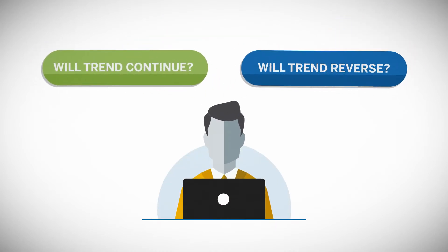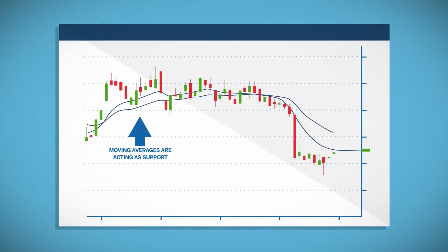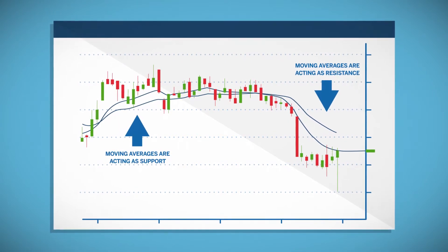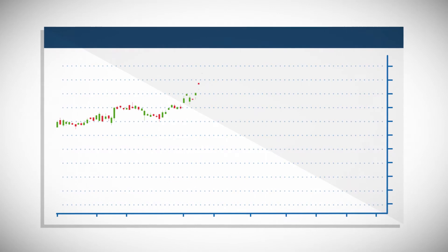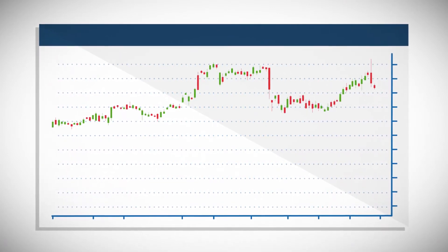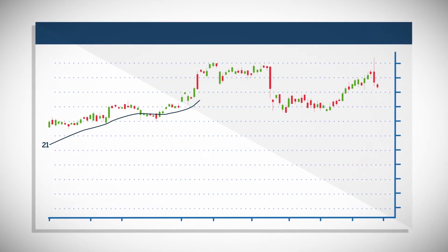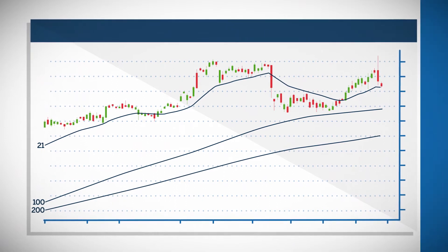Let's look at how traders could use moving averages of various lengths to indicate levels of support and resistance. Moving averages below price may form levels of support, while moving averages above price may create levels of resistance. Traders can add more than one length of moving average to visualize initial and deeper levels of support and resistance. For example, a trader might add the 21, 100, and 200 period exponential moving averages to their charts.